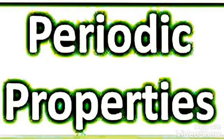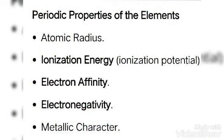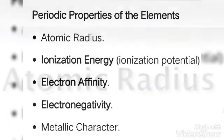Periodic properties of elements. In the modern periodic table, those properties which show a regular gradation with the increase of atomic number are called periodic properties. Some periodic properties are atomic radius, ionization energy, electron affinity, electronegativity, and metallic character.